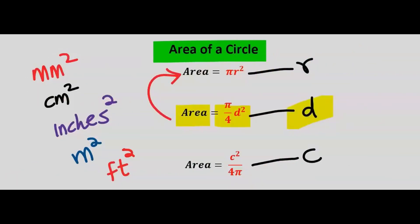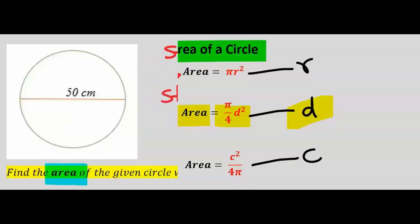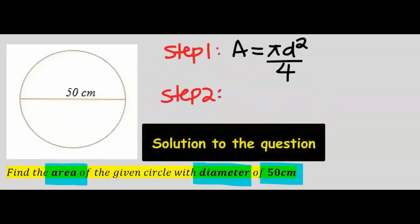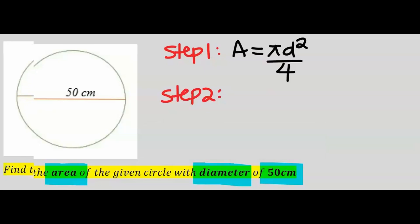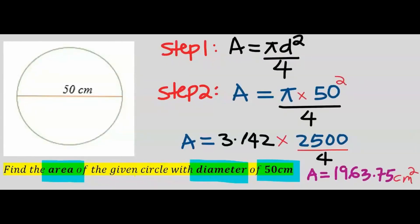After writing out the formula, the next step is to substitute. The area of this circle is 1963.75 centimeters squared to two decimal places and six significant figures.